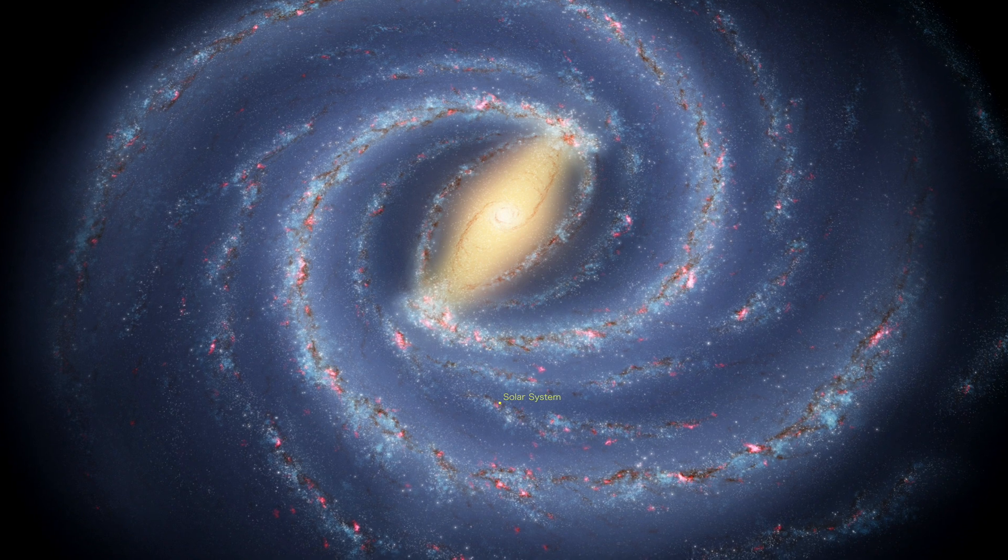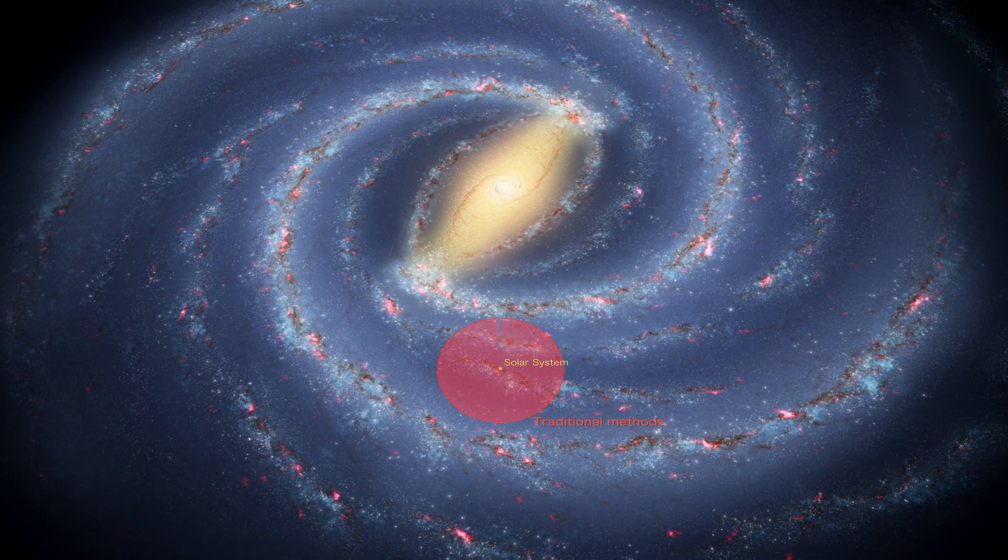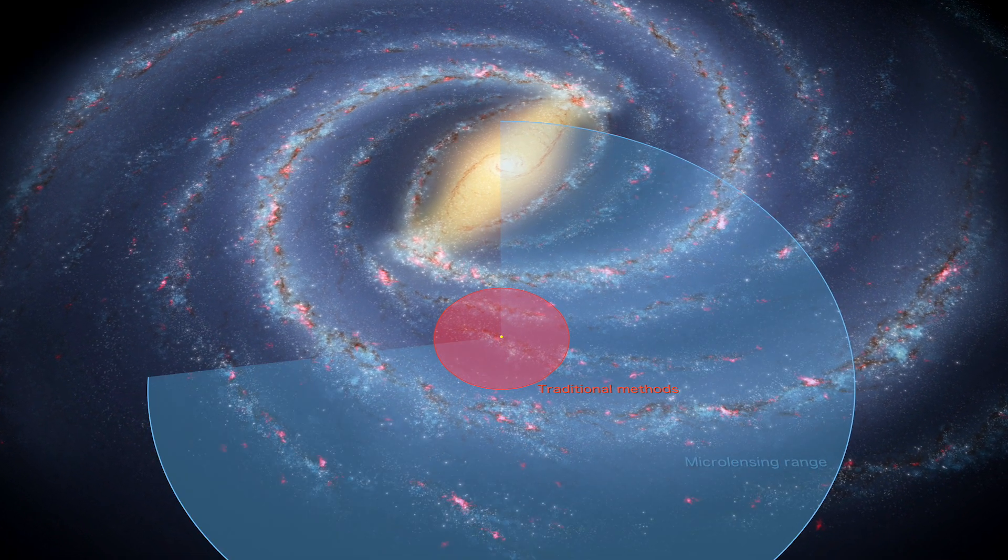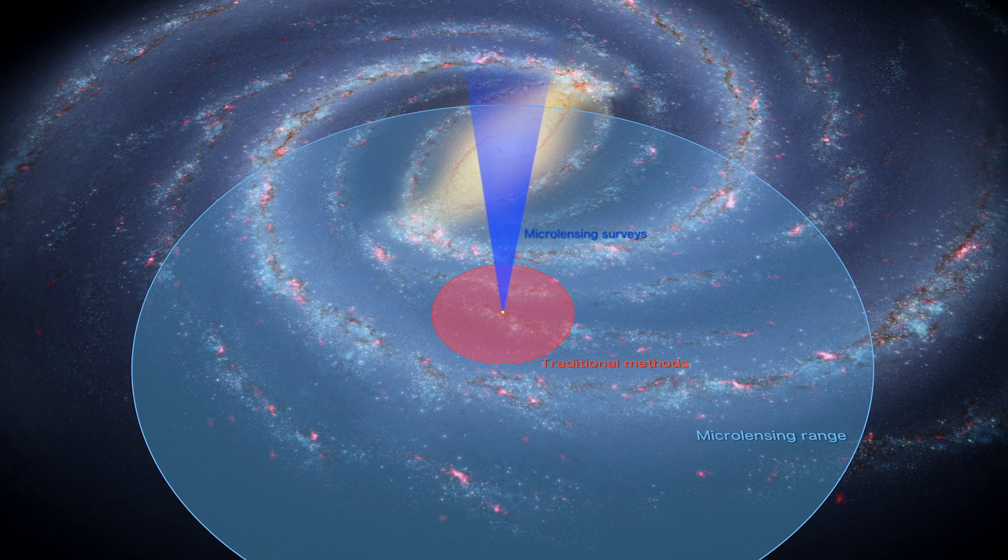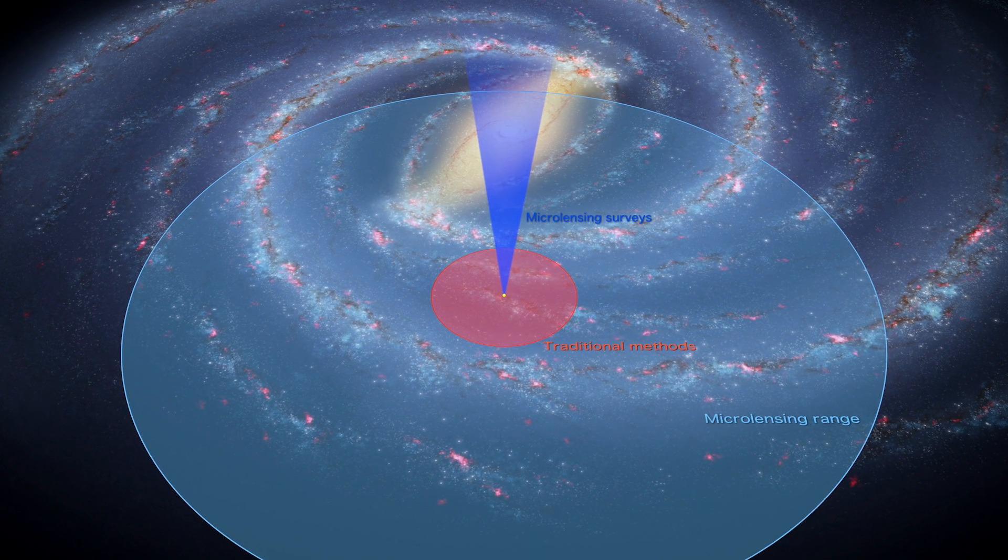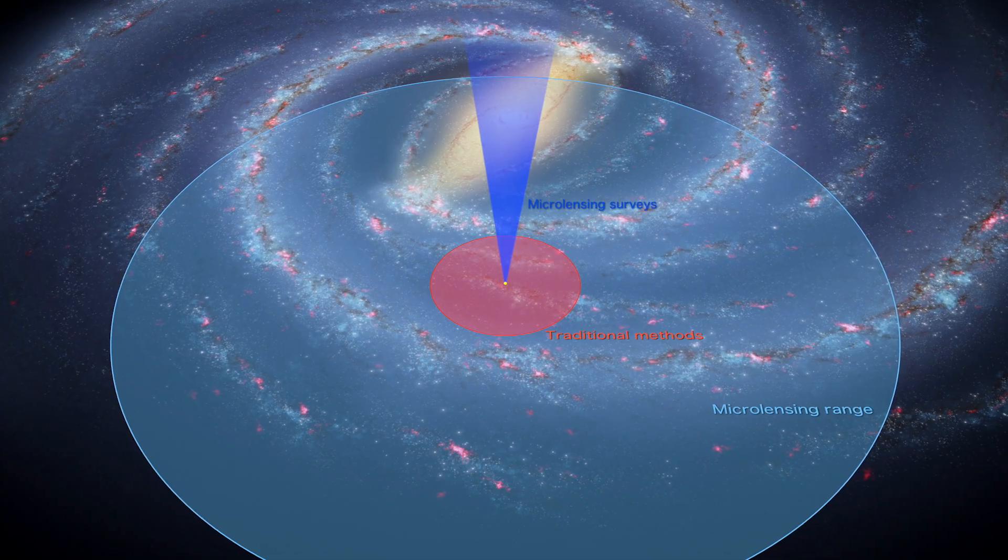Microlensing opens a planetary window onto a larger part of the galaxy, reaching thousands of light-years. And because microlensing is more sensitive to smaller planets farther from their stars, it can reveal new planetary populations.